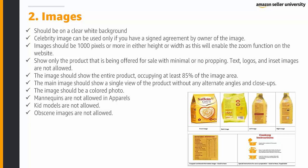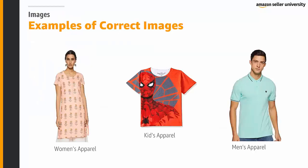Regarding images: images should be clear on a pure white background. Celebrity images can be used only if you have a signed agreement from the image owner. Images should be 1,000 pixels or more in height or width to enable the zoom function. Show only the product being offered for sale with minimal or no cropping. Text, logos, and insert images are not allowed. The product should occupy at least 85% of the image area. The main image should show a single view without alternate angles or close-ups, and must be a colored photo. Mannequins are not allowed in apparels, kids models are not allowed, and obscene images are not allowed. Correct image examples include women's, kids', and men's apparel all meeting Amazon guidelines.